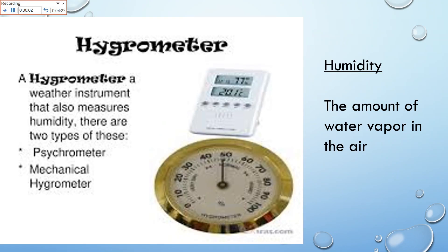Hygrometer — hydro has to do with water, so a hygrometer measures humidity, and humidity is the amount of water vapor in the air. You can get them in different forms — one is digital, one is a dial. So a hygrometer measures humidity, and humidity is the amount of water vapor in air.